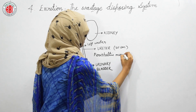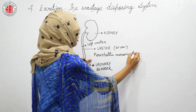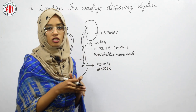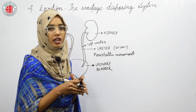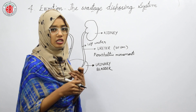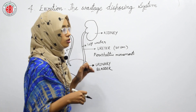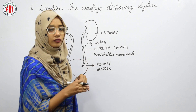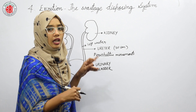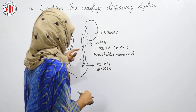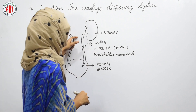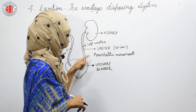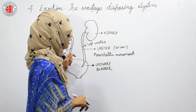Peristaltic movement is the movement caused by the contraction of muscles. The wavy movement of the muscles enables the urine to pass through the ureter. This is called peristaltic movement.